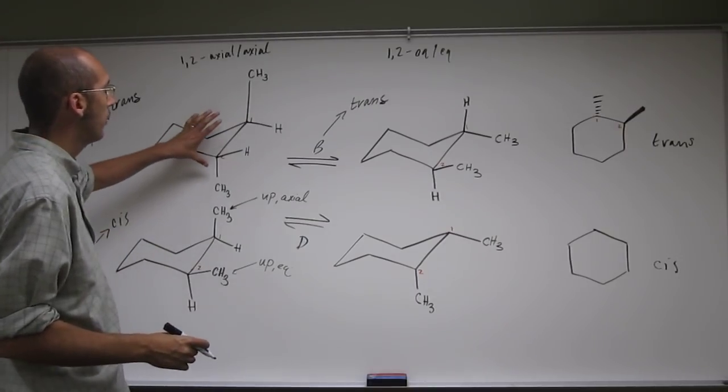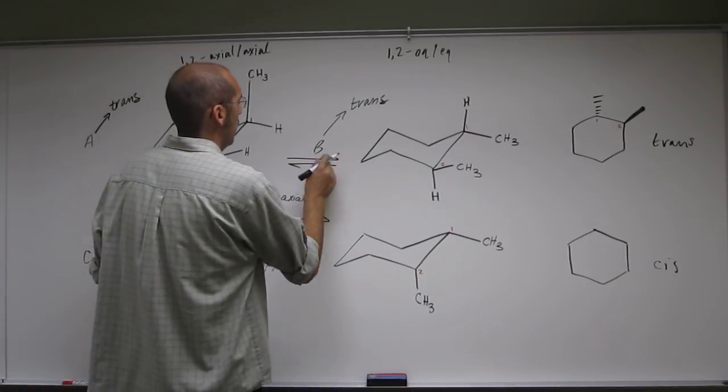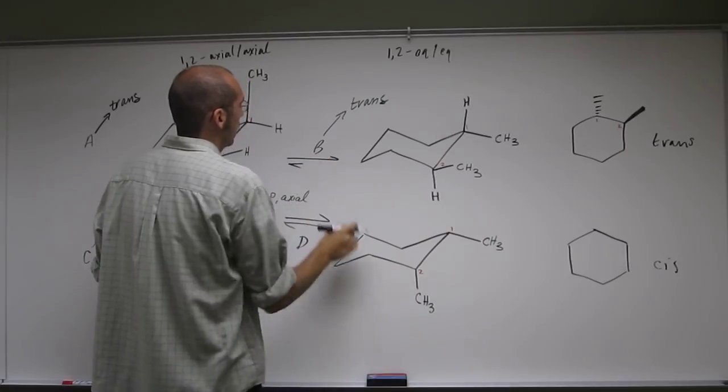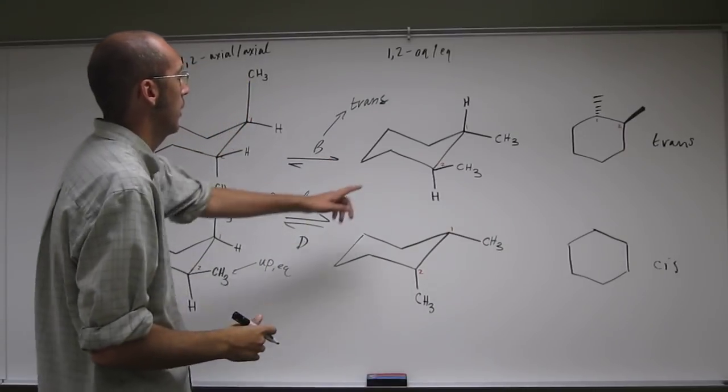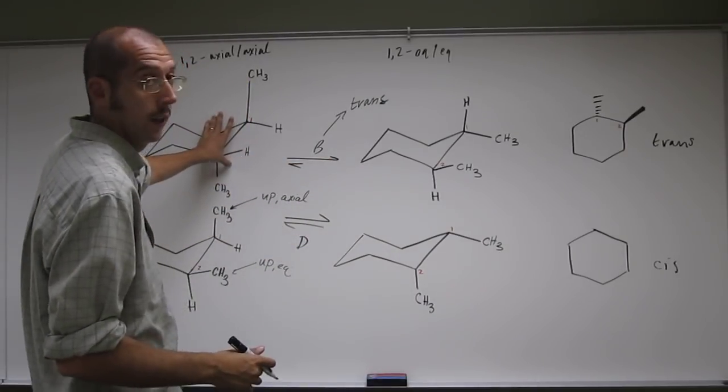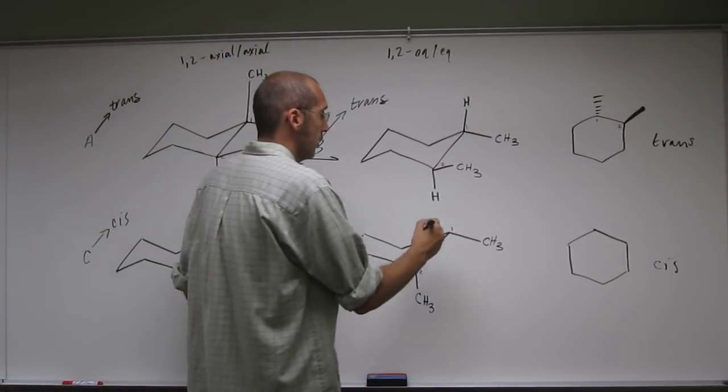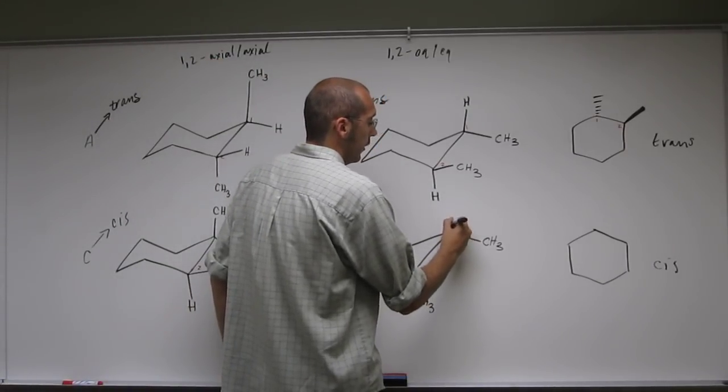And on both of them, this one is going to be much more favorable to go that way. Because we've got two equatorials here and here we've got two axials. But this one, neither one of them is more favorable. So let's just go ahead and finish this off.